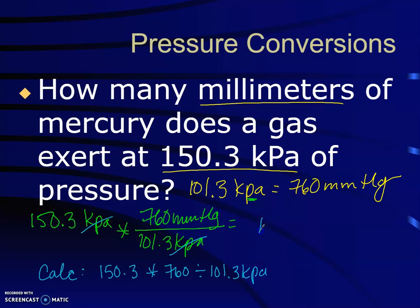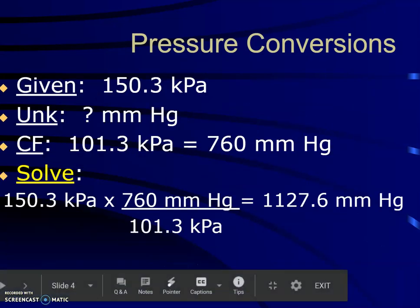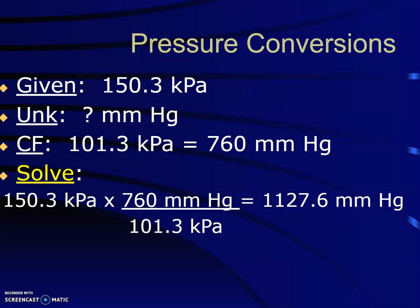And we have our mmHg. In our calculators, what we do is we type in 150.3 times 760 and then divide by 101.3 kPa. That is going to give us 1127.6 mmHg. So you got to be really comfortable with converting all of our pressure units because we have to make sure that pressure is in the same unit on each side of our equation. Because we're basically looking at a whole bunch of proportions, whether it's directly or inversely proportioned, and we have to make sure that they work out.